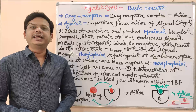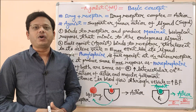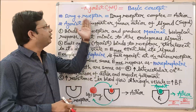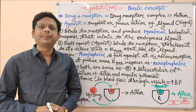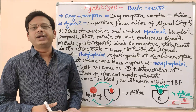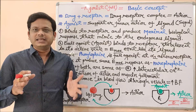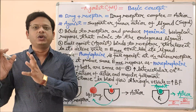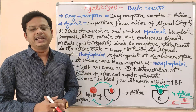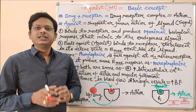Hello friends, welcome to the channel Pharmacy Dictionary. In today's topic we are going to study about a simple yet very important word, and that is agonist — their basic concept with representative example and demonstration. First of all, let's try to understand the meaning of agonist. Simply, any signal molecule or any drug which will act as a physiological ligand is known as an agonist.